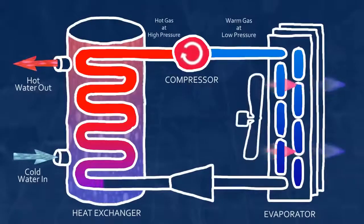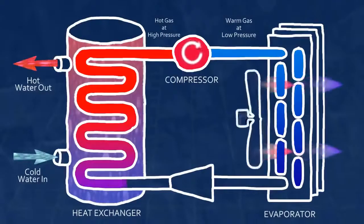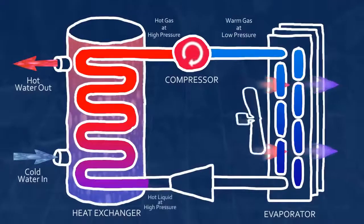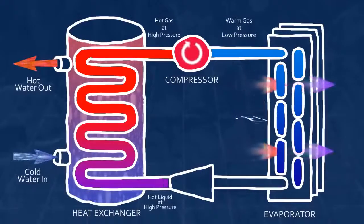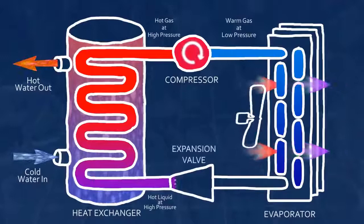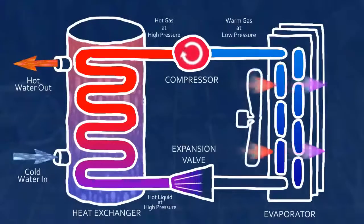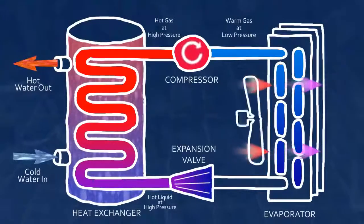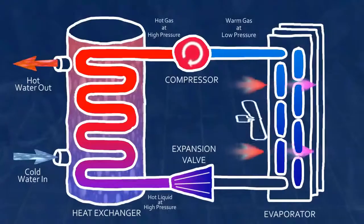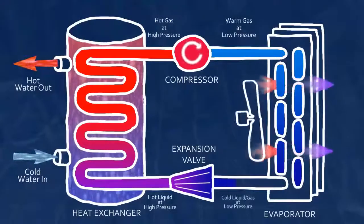Finally, the now cooler high pressure liquid refrigerant passes through an expansion valve. As the refrigerant passes through the valve, its pressure and temperature are greatly reduced. Now cold and in a vaporous state, the refrigerant is once again ready to absorb heat from the room air and repeat the cycle.